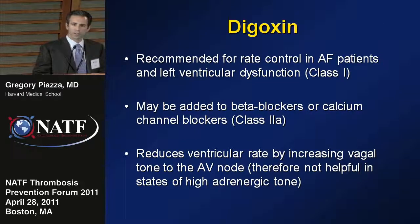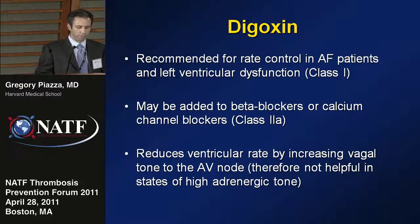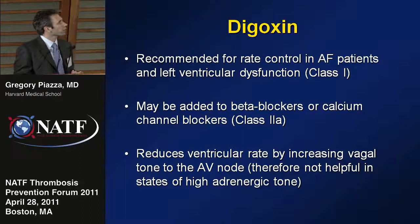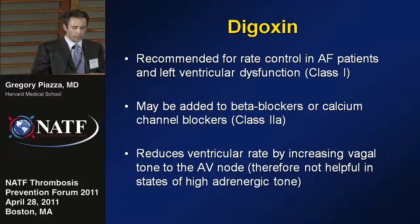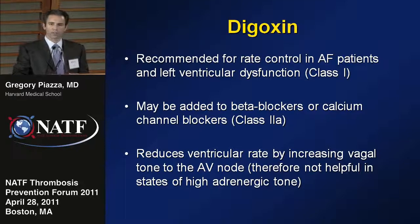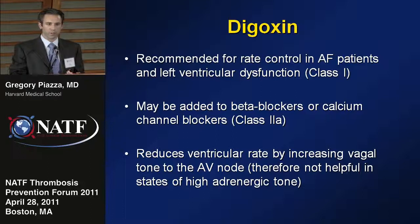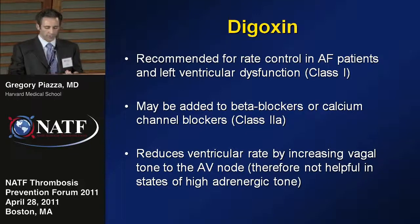Digoxin is another agent commonly used for rate control. It's recommended in patients with atrial fibrillation and left ventricular dysfunction, and can be added to beta blockers or calcium channel blockers. Digoxin works by reducing ventricular rate through increasing vagal tone to the atrioventricular node. Therefore, it's not helpful in states of high adrenergic tone — patients on digoxin will notice their rate control is not as good when exerting themselves or under stress.